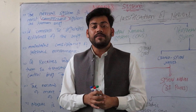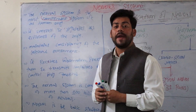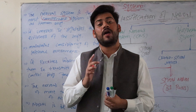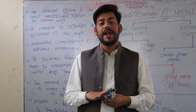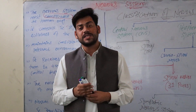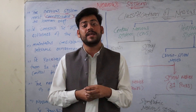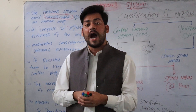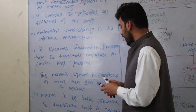The nervous system is made of 100 billion neurons. Our nervous system is made of a large number of neurons — it is 100 billion neurons.